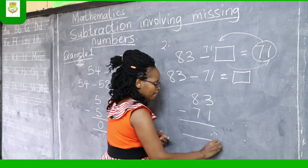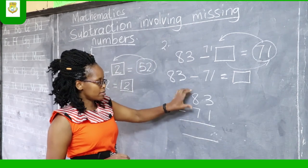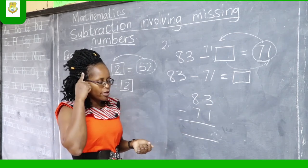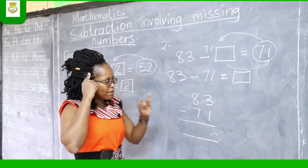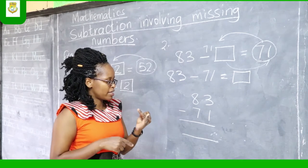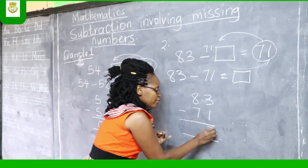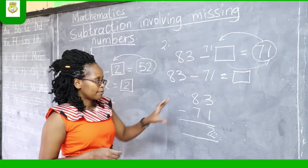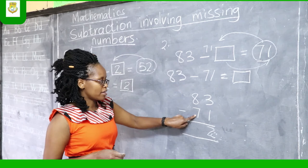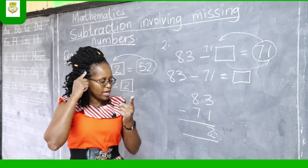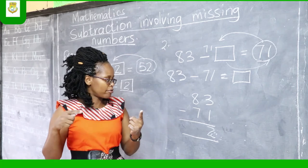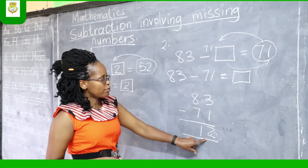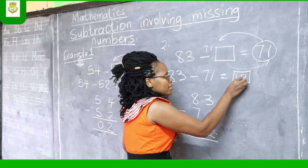Let's work it out. This is the tens column, and this is the ones column. We start with the ones column: 3 take away 1. Count: take away 1, 2, 3. At the count of 3 we stop and count our fingers — the answer is 2. Write 2 below the ones column. Then on the tens side, we have 8 and 7. Take away 7 from 8: count up to 8, and the answer on our fingers is 1. So our answer is 12. We write 12 in the missing box as the missing number.